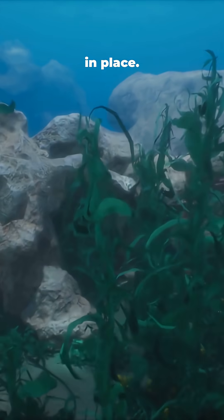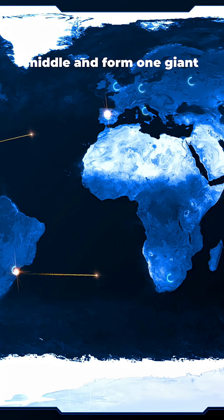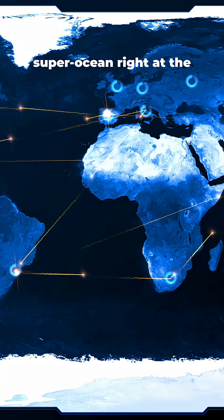Even the oceans wouldn't stay in place. They'd slide toward the middle and form one giant super ocean right at the center of the disk.